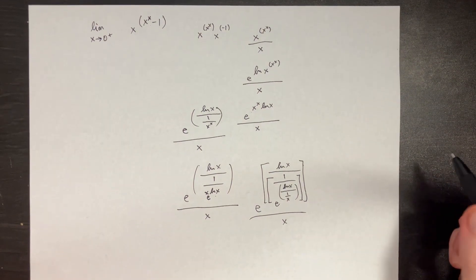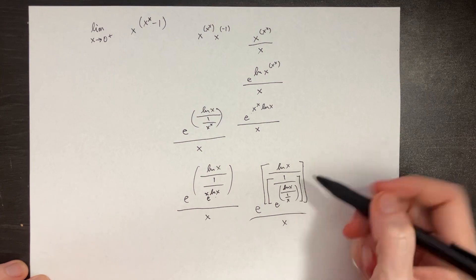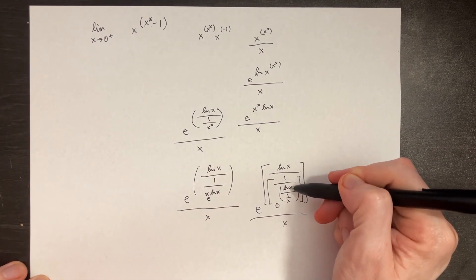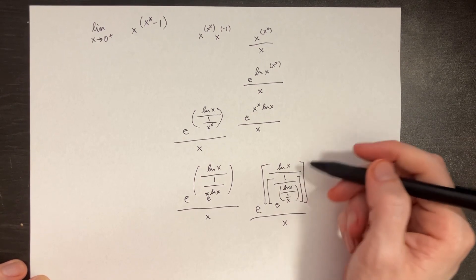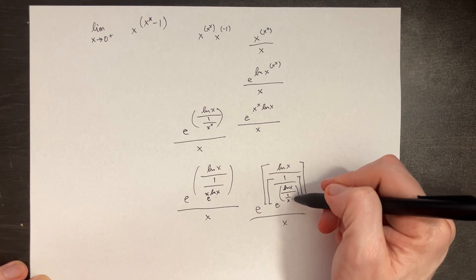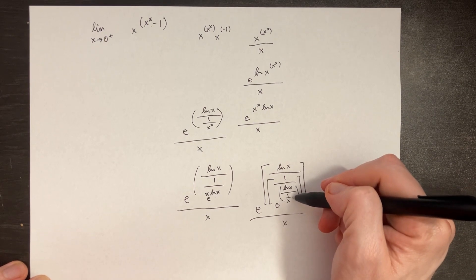Now let's try to send x to the 0 from the positive side at least. So when we do that, if we go to the ln of 0, we're going to get something like negative infinity on top, and then on the bottom we'll get some infinity as well.